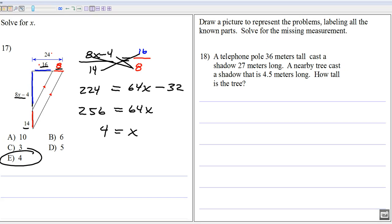Some people like to set it up this over this and then that over that. And you'll get the same cross product. It's just a little different setup. So it all depends on how you want to do it. All my favorites. Now we're getting into some good shadow problems. Get all excited. So we draw the ground. A telephone pole. So we got a telephone pole. 36 meters tall. Cast a shadow 27 meters long. So down here on the ground is the shadow. That's 27 meters.